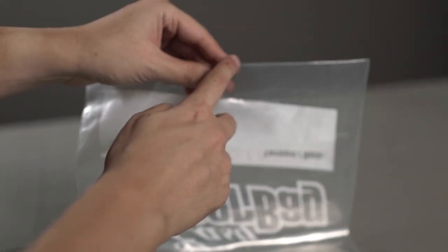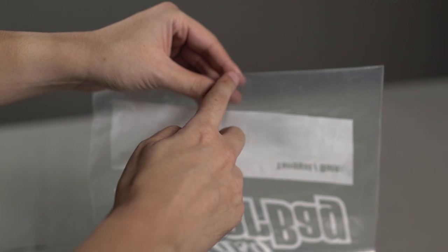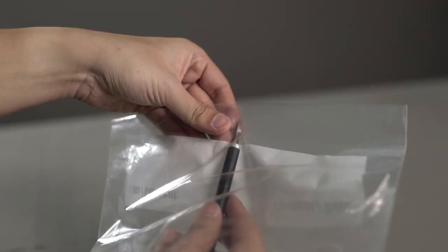First thing you need to do is make a hole in the middle of the bottom part of this ziplock bag. Just poke it with a pen knife or scissors.